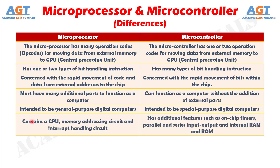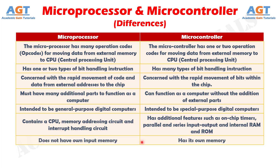Number 6: The microprocessor contains a CPU, memory addressing circuit and interrupt handling circuit, whereas the microcontroller has additional features such as on-chip timers, parallel and series input-output, and internal RAM and ROM. Number 7: The microprocessor does not have its own input memory, whereas the microcontroller has its own memory.